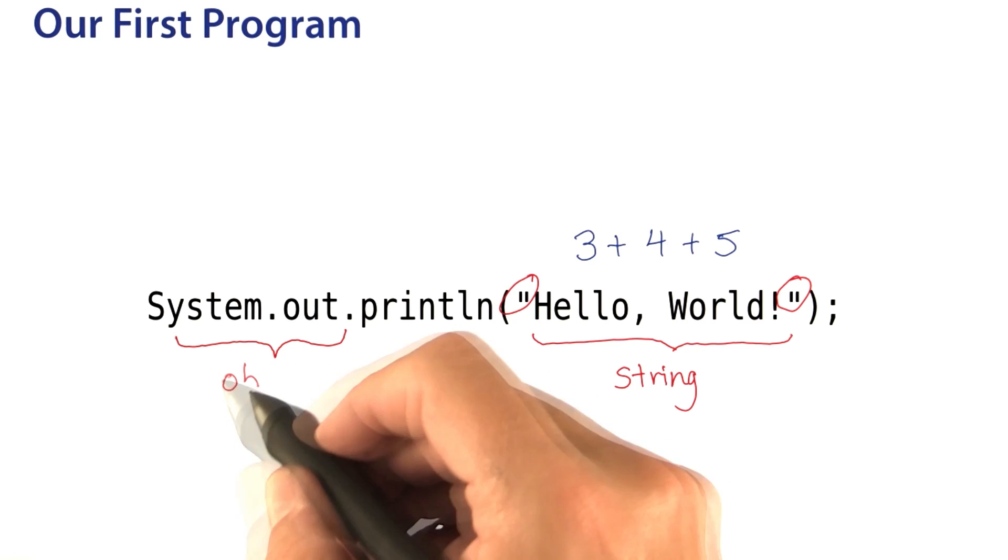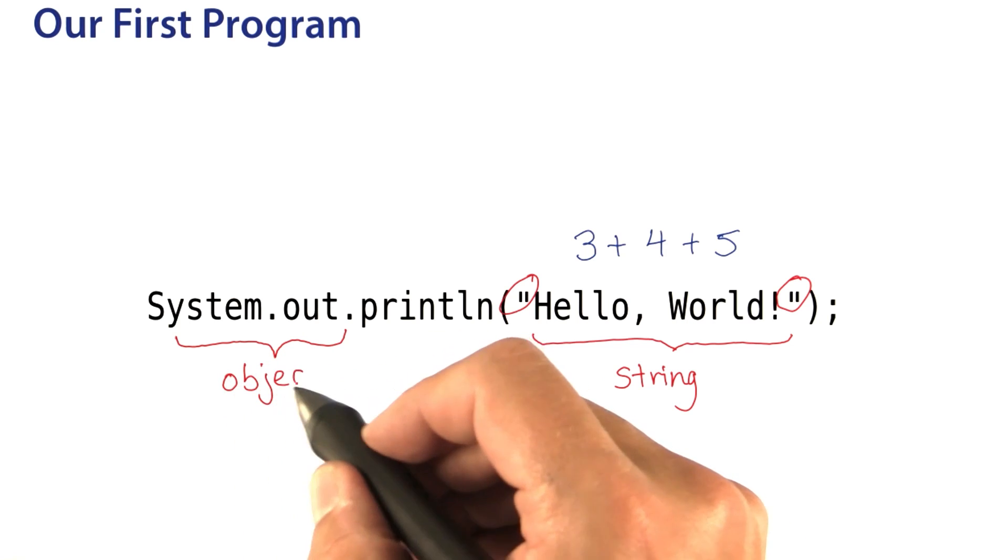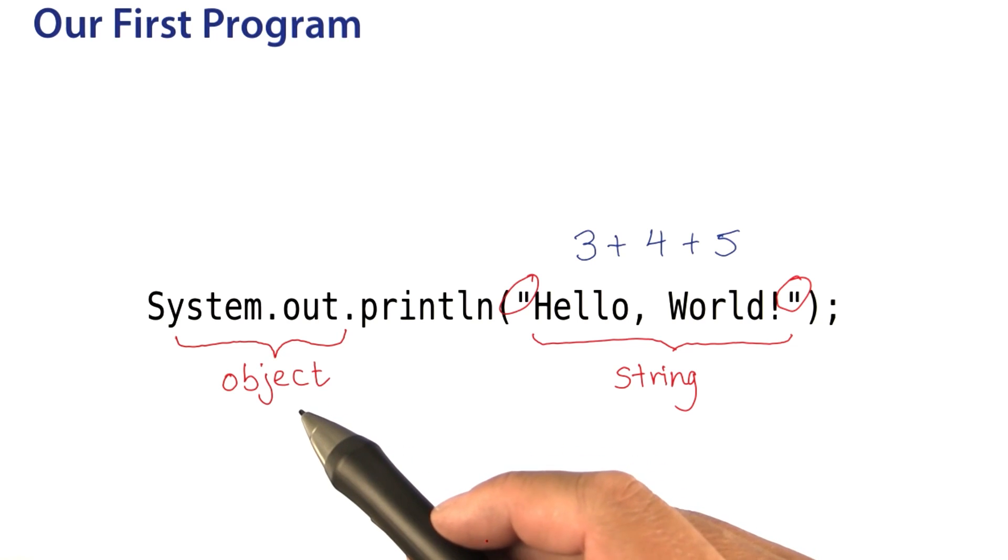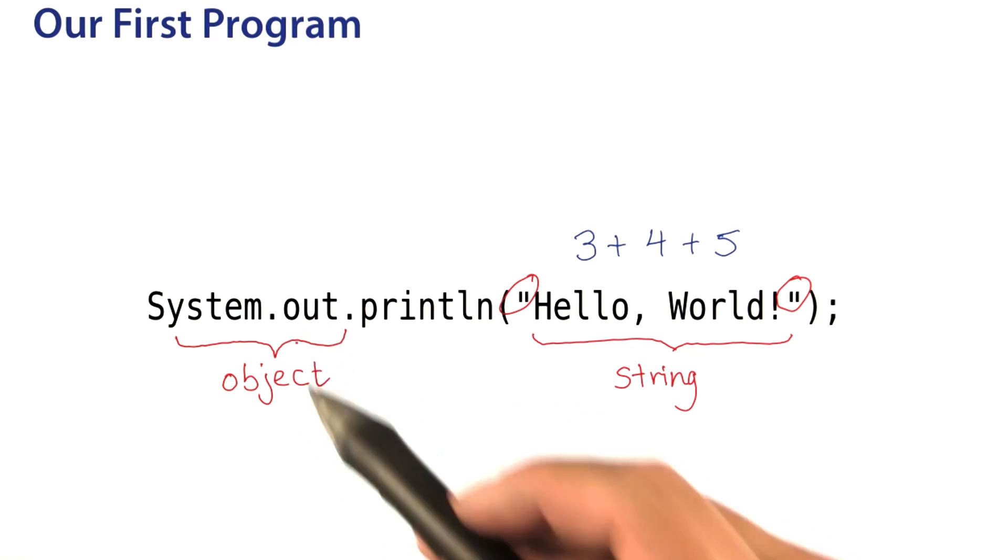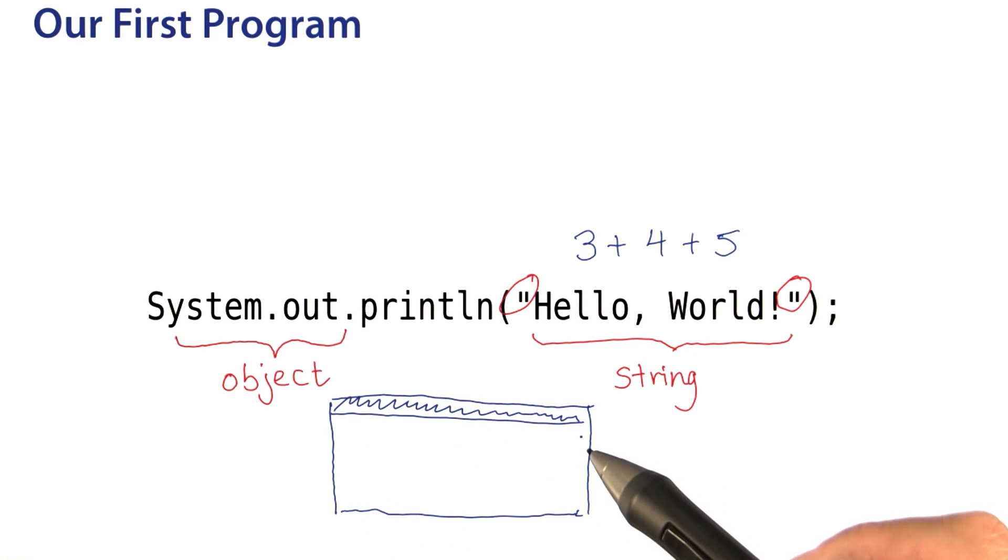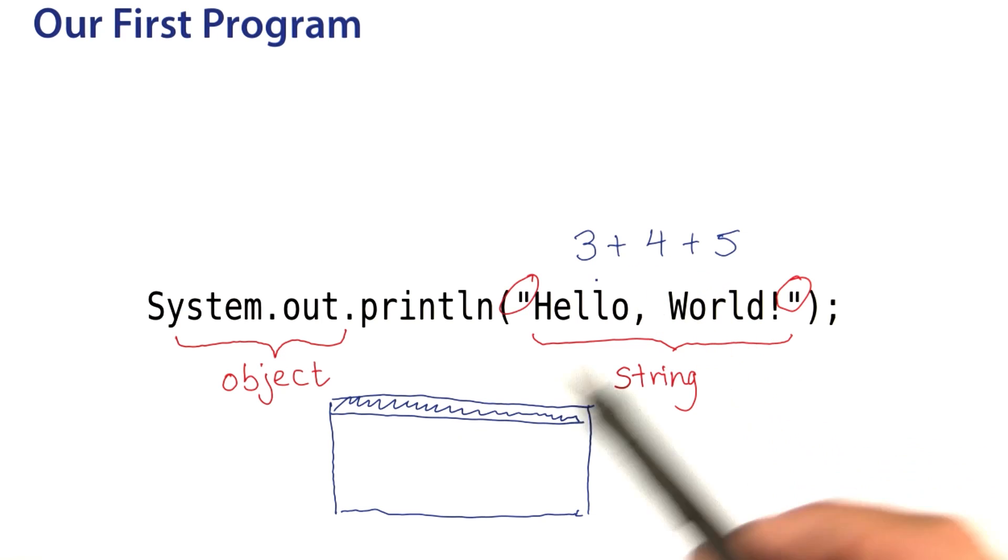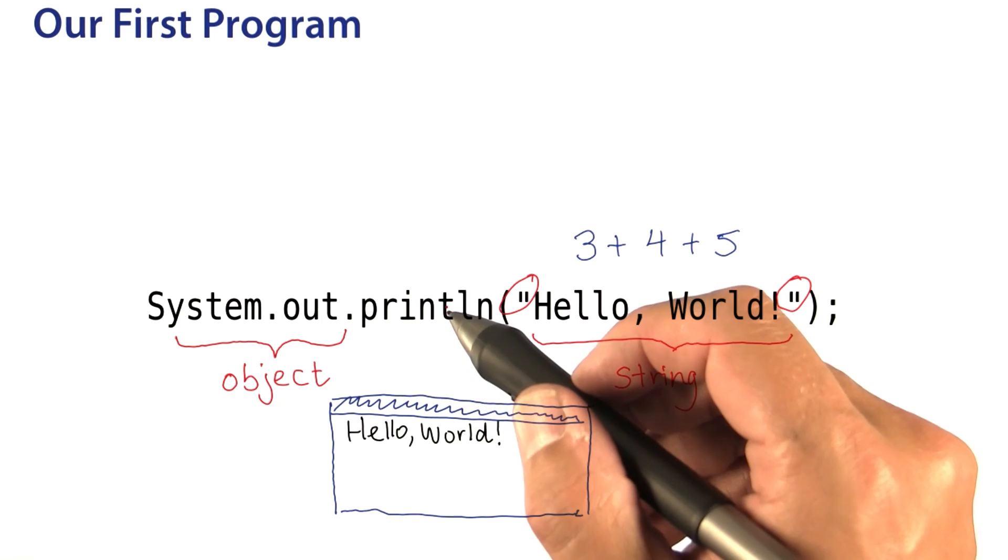System.out over here is technically called an object. As you'll see in the next lesson, objects are things that do work for us in a programming language. This particular object represents the terminal window, the window in which a string or a number is printed when println does its job.